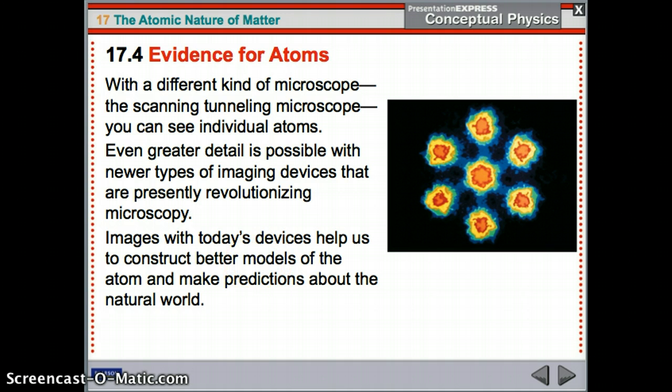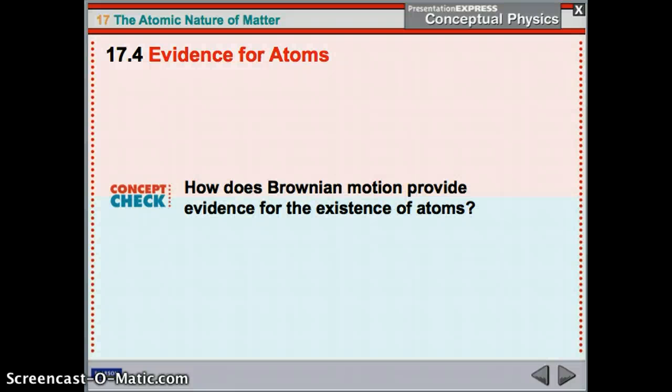Okay, so we're able to construct really good models of the atom and then make predictions about how they interact with the natural world. So how does Brownian motion provide evidence? Since atoms are in motion, they hit those larger molecules nearby and they make a move. And so we know that something's there because it's jiggling.